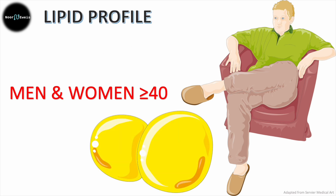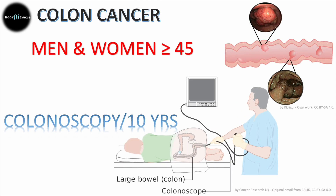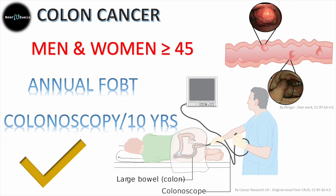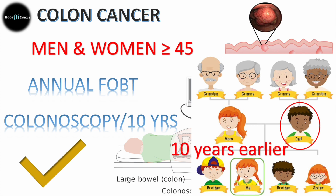Men and women 40 and up are screened for hyperlipidemia every five years. The final screening for both men and women is colon cancer for those 45 and up. The gold standard is colonoscopy every 10 years; however, if the patient considers this too invasive, we can replace it with annual fecal occult blood testing. For family history, if a first-degree relative had colon cancer, the patient must be screened 10 years earlier than the age at which that relative was diagnosed — for example, if their father got it at 40, they screen at 30.